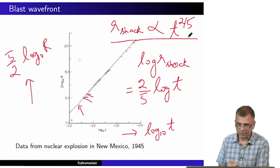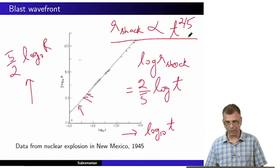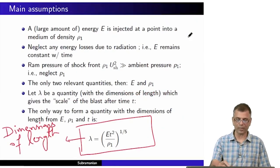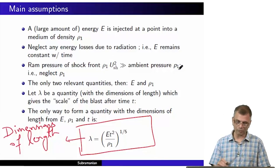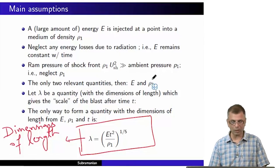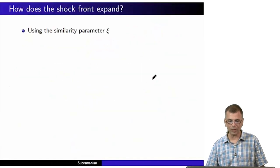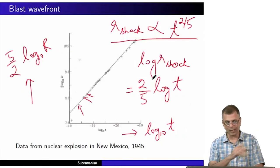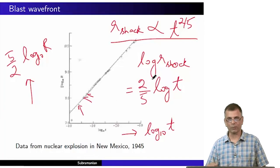It's almost scary how well the data agrees. This is an amazing vindication of our simple prediction — which involved only simple assumptions: the fact that the energy remains unchanged, the ram pressure of the shock front is much larger than the ambient pressure, there are only two relevant quantities, and the shock front evolves self-similarly. At least by way of terrestrial shocks produced by a bomb blast, the data agrees amazingly well with the predictions. This gives us confidence that the way we are proceeding is indeed correct. We'll stop for the time being — thank you.